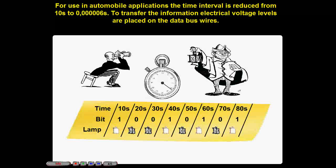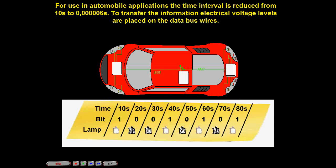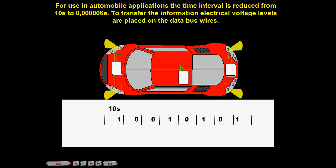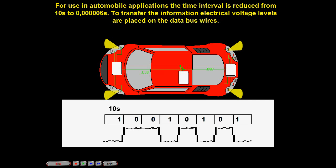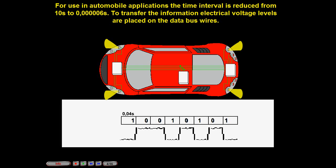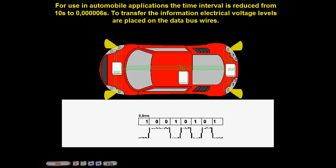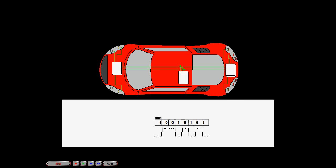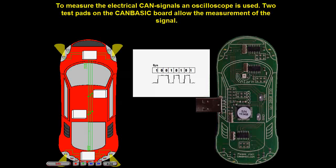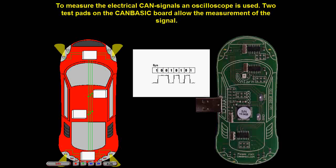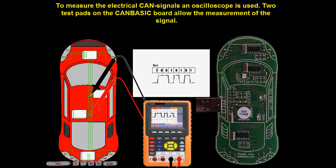For use in automobile applications, the time interval is reduced from 10 seconds to 6 microseconds. To transfer the information, electrical voltage levels are placed on the data bus wire. To measure the electrical CAN signals, an oscilloscope is used. Two test pads on the CAN-BASIC board allow the measurement of the signal.